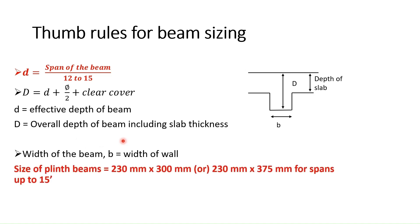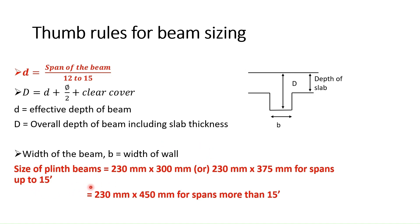You can consider size of the plinth beam as 230 mm by 300 mm or 230 mm by 375 mm for spans up to 15 feet, and 230 mm by 450 mm for spans more than 15 feet. The size of the plinth beams is much less compared to beams at typical floor level because the plinth slab rests on the soil, so we do not apply any load on the slab at plinth level or on the plinth beams.